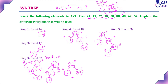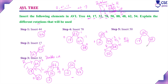To fix the imbalance, we perform a right-left (RL) rotation. First, perform a right rotation on the subtree: 50 comes up and 78 becomes its right child. Then perform a left rotation: 50 becomes the root of the subtree, 44 becomes its left child, and 78 becomes its right child. Checking balance factors: all leaf nodes are 0; node 50 is 0; node 32 is 1 minus 2 = -1. The tree is now balanced.